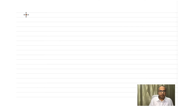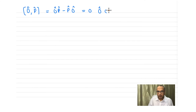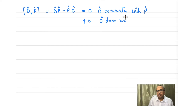Now let's come back to the first condition of the corollary, which says the operator must commute with parity. Commutation is written mathematically as [O, P], which means O·P minus P·O. If this goes to zero, we say O commutes with P. If it does not go to zero, we say O does not commute with parity.